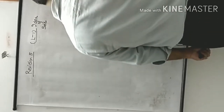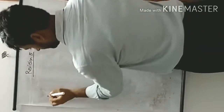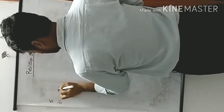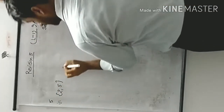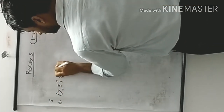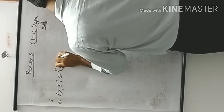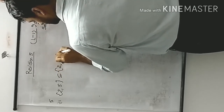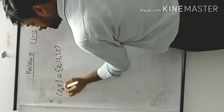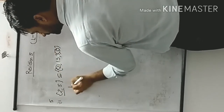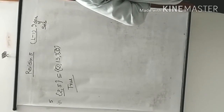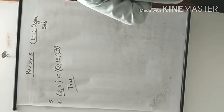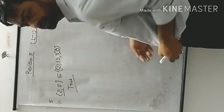True or false: {2, 5} is a subset of {1, 2, 15, 3, 5}? Both 2 and 5 are present in the second set, so it is a subset — this is true.